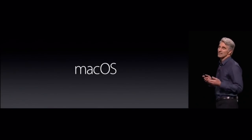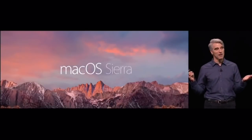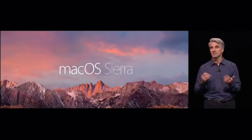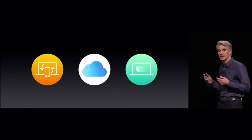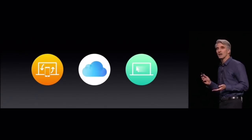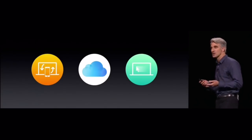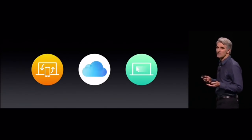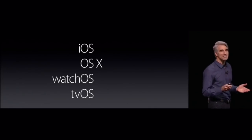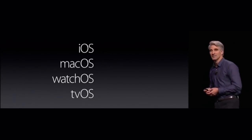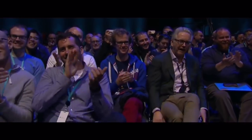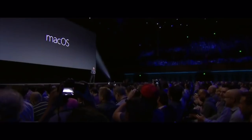Mac OS X 10.12 Sierra was released to the public on September 20th, 2016. New features included Siri, Optimized Storage, Auto Unlock with the Apple Watch, Night Shift, and updates to Photos, Messages, and iTunes. During Sierra's introduction, Apple announced they'd be changing the name of Mac OS X to simply Mac OS — a change that made sense since it mirrored Apple's other operating systems: watchOS, tvOS, and iOS.